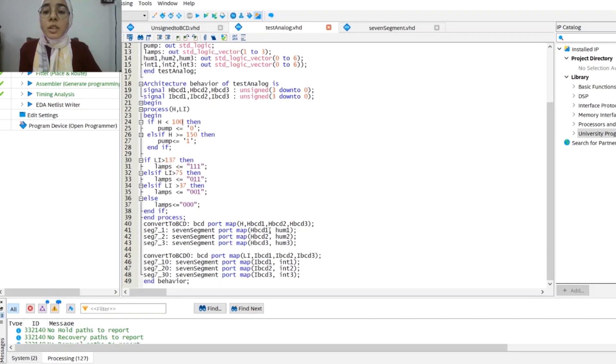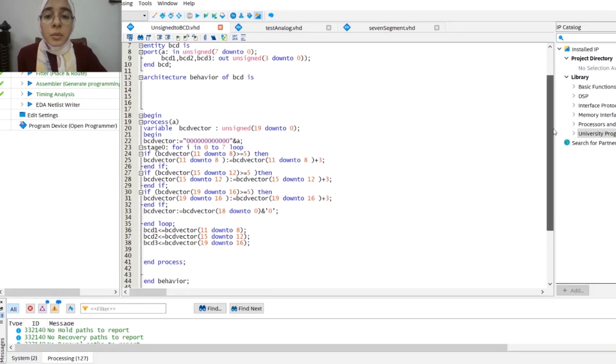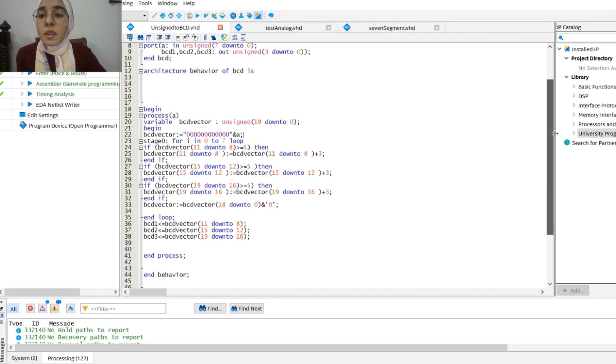After the process ends, we convert the binary reading of the sensors to the corresponding BCD numbers so we can display them on the seven-segment display. In the BCD conversion part, we have an 8-bit input vector and three 4-bit output vectors. Each one represents a number that we want to display on the seven-segment.